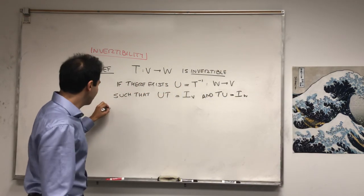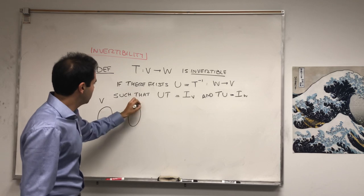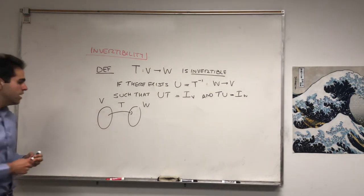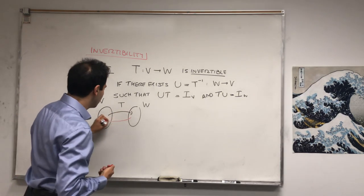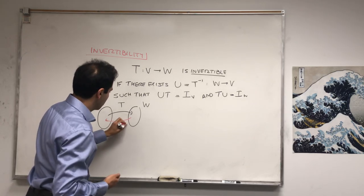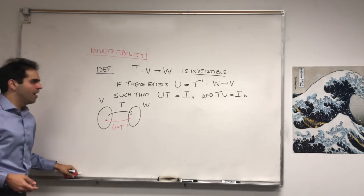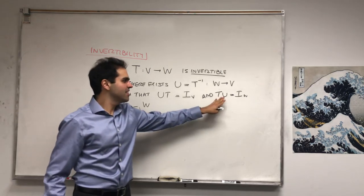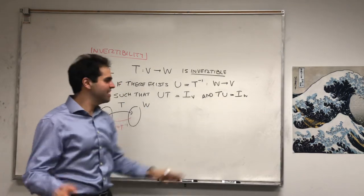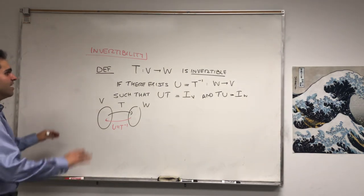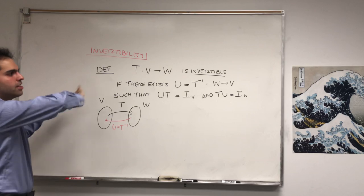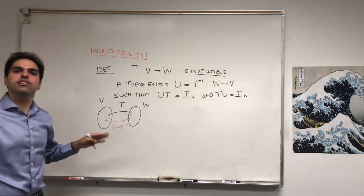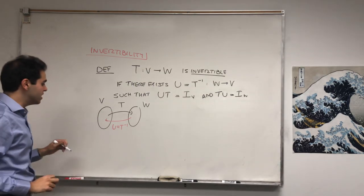In terms of a picture, if this is V and this is W and we have T, think of T as a direct flight — then T inverse is the return flight. And this has no relationship with University of Texas or Technical University of Vienna. You can show that an inverse exists if and only if T is one-to-one and onto, and that's done in another video.